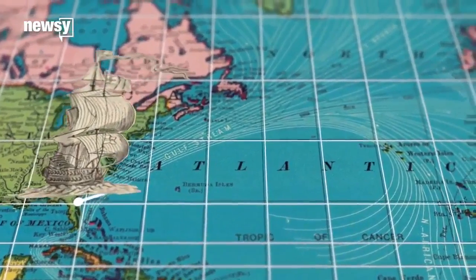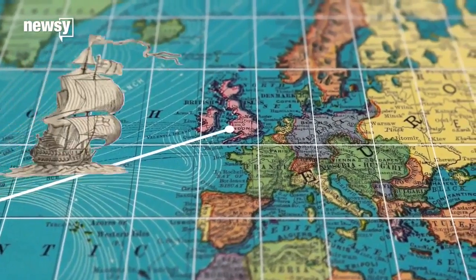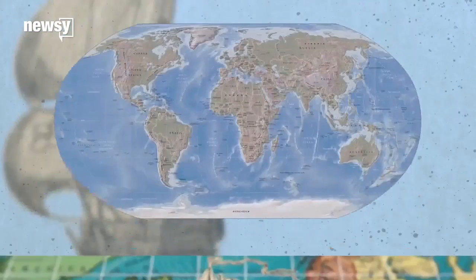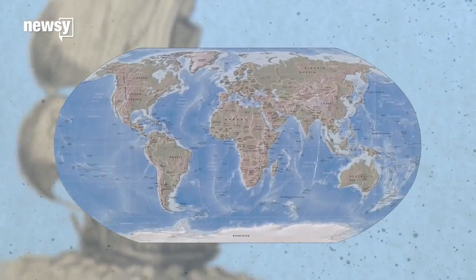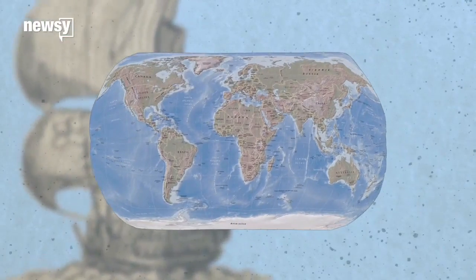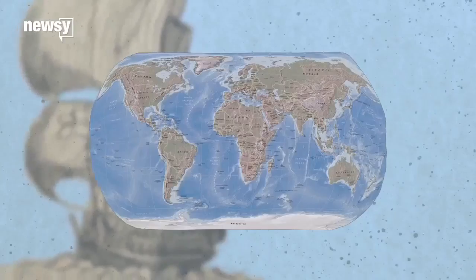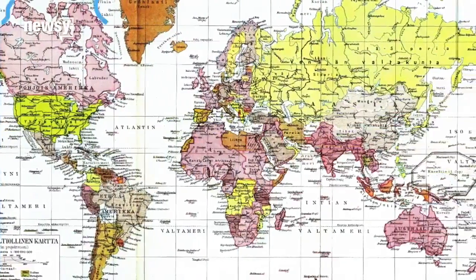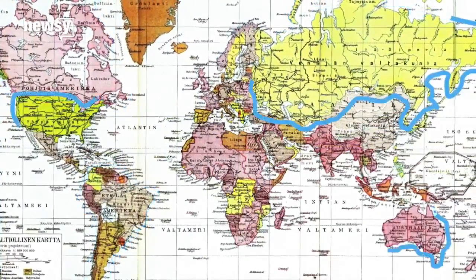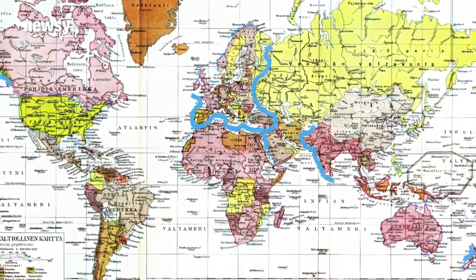All you had to do was draw a line to where you wanted to go on the map and follow your compass. But to make a navigation-friendly map, the projection distorts landmasses the closer they are to the poles. That gives us the wrong idea about the relative size and maybe even the importance of some regions.